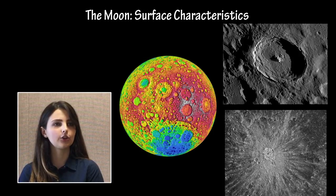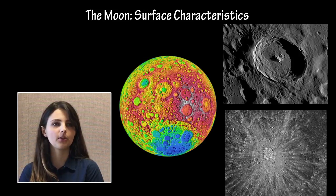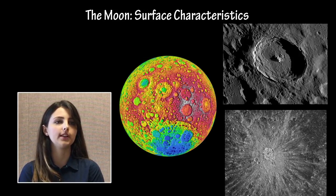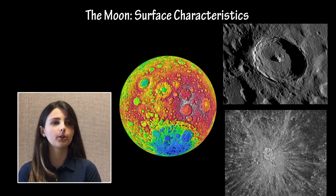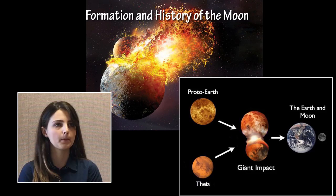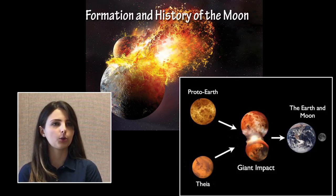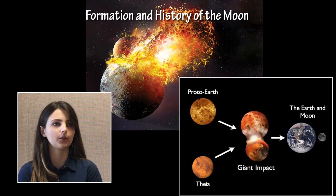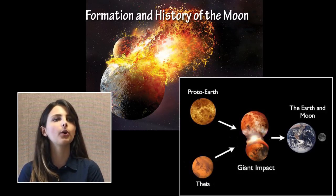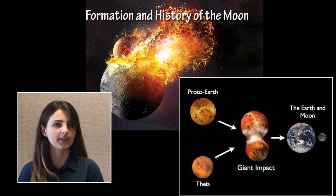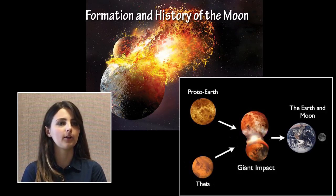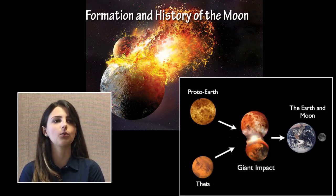Features known as highlands, dark plains called maria, and rills, domes, and grabens are also found on the moon. There are many more craters on the far side of the moon than the near side, as it is more exposed to bombardment coming toward the Earth-moon system. The formation of the moon has long presented questions to scientists, as the moon is the largest satellite relative to its host planet in the solar system. One of the most favored explanations is the giant impact hypothesis, which proposes that the moon was created when a large body collided with Earth, breaking off a significant amount of material that then coalesced in orbit around Earth.